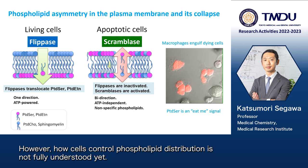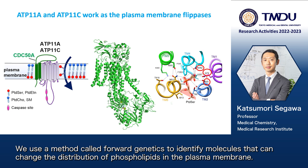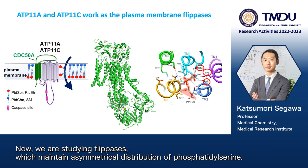However, how cells control phospholipid distribution is not fully understood yet. We use a method called forward genetics to identify molecules that can change the distribution of phospholipids in the plasma membrane. Now, we are studying flippases, which maintain asymmetrical distribution of phosphatidylserine.